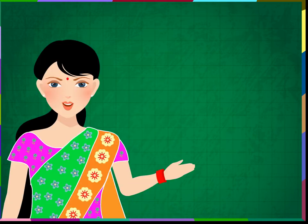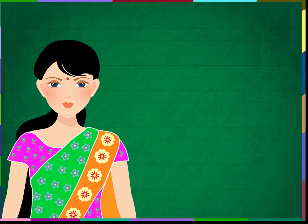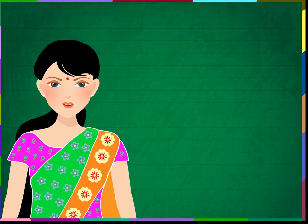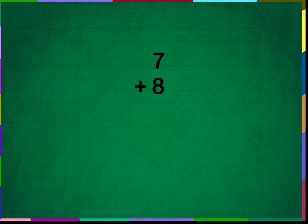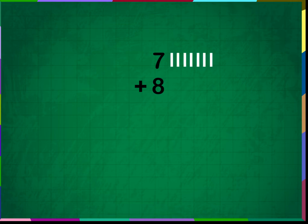We know that we can do addition vertically. We learnt vertical addition in the previous lesson too, and we know that vertical addition will be used for bigger numbers. Add seven plus eight. Let us place the numbers vertically one below the other and draw seven small lines beside the number seven.